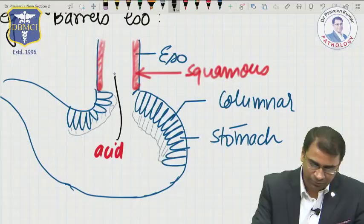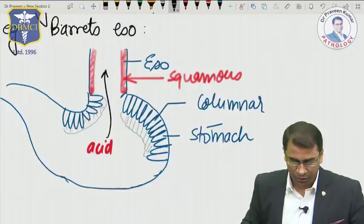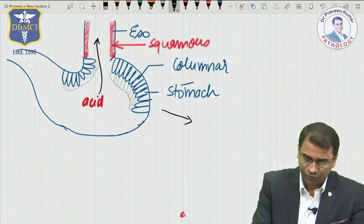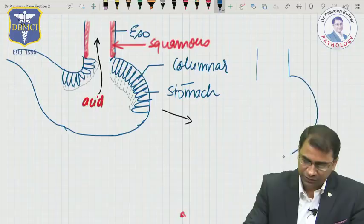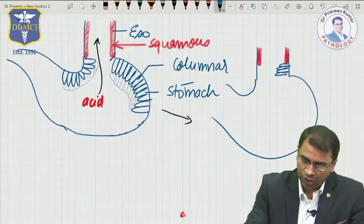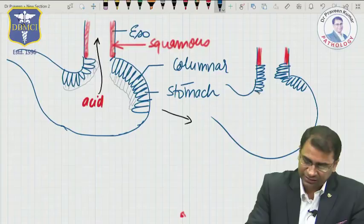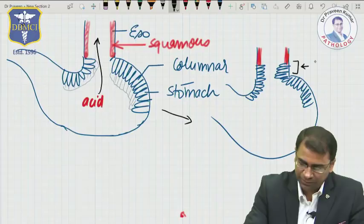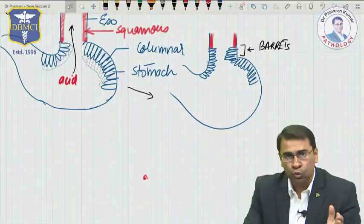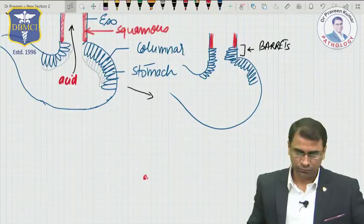What happens if this acid refluxes back into the esophagus? The acid will chronically irritate the lower part of the esophagus. When the acid chronically irritates the lower esophagus, the esophagus — which normally had squamous epithelium — will now have columnar epithelium in its lower part. Why? Because columnar epithelium can prevent acid digestion. This new epithelium is called Barrett's esophagus. So, the epithelium which has changed from squamous to columnar is called Barrett's.